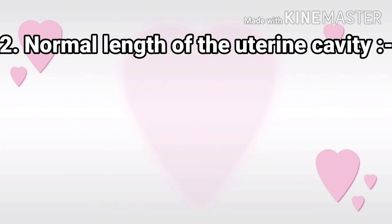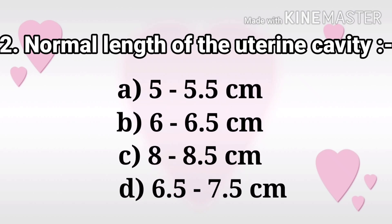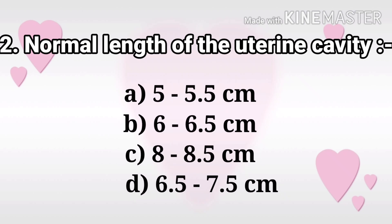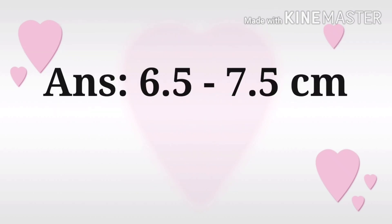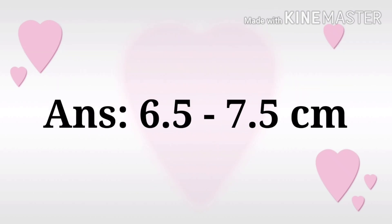Next question: Normal length of uterine cavity. The options are 5 to 5.5 cm, 6 to 6.5 cm, 8 to 8.5 cm, 6.5 to 7.5 cm. The answer is 6.5 to 7.5 cm.